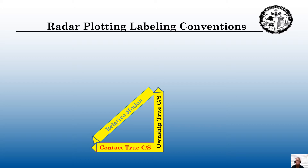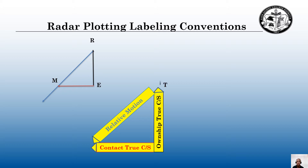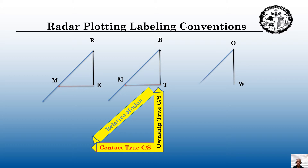There are three basic radar plotting labeling conventions used for radar plotting. I will be using the ERM triangle, mentioned in publication 1310, the Radar Navigation and Maneuvering Board manual. Also mentioned in that manual is the RTM method, and in Europe they use the WOA method for radar plotting.